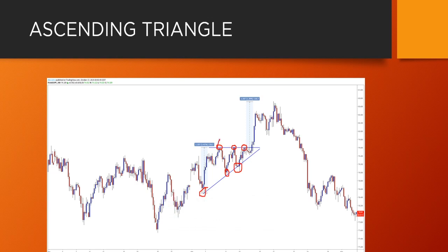Until those orders are exhausted, when the orders are over and there is no more selling pressure, we see the breakout happening. That is the simple explanation for why such a triangle occurs. To summarize: an up-sloping trend line and a horizontal resistance level are what you're looking for, and that is what defines an ascending triangle.